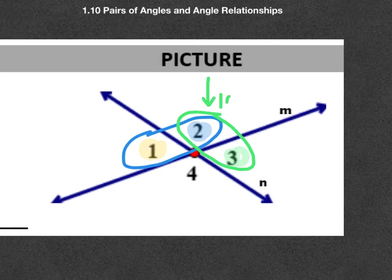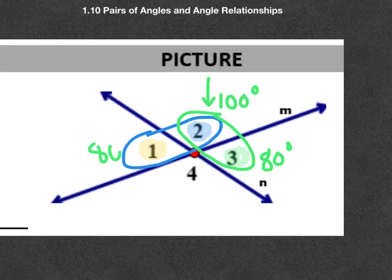Let's just show you. Let's say this angle here was 100. Well, that would make angle 3 80. And what would it make angle one? It would make angle 1 80. So actually, it is true that vertical angles must be equal to each other.